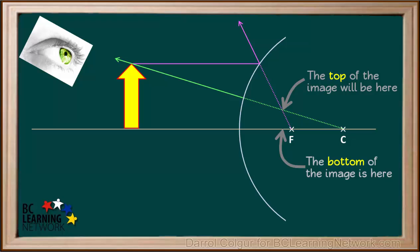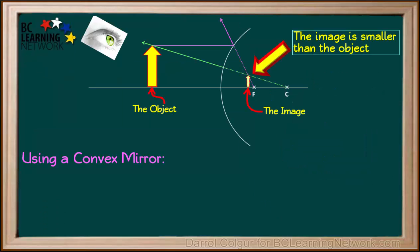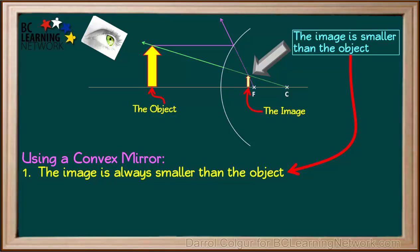So now that we know where the bottom and the top of this image are, we can draw in the image, like this. Notice that in this case the image is smaller than the object. In fact, it turns out that in a convex mirror, the image is always smaller than the object.